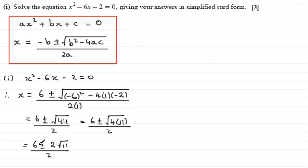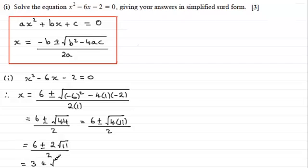Now we've got two terms and both of them are divisible by 2. So we can divide both the 6 and the 2 root 11 by 2 to give us finally 3 plus or minus root 11. And there's your answer.